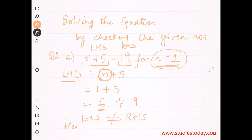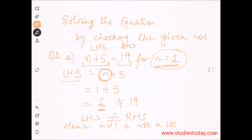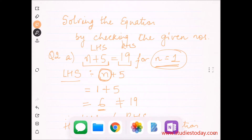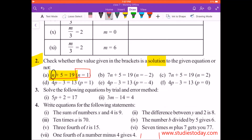6 RHS ke equal nahi hai, jo ki 19 hai. Therefore LHS is not equal to RHS. Hence n equal to 1 is not a solution. Yeh standard short form hai; agar aapko aisa nahi pasand toh aap poora word likh sakte hain. So the first part is done — it is not a solution.